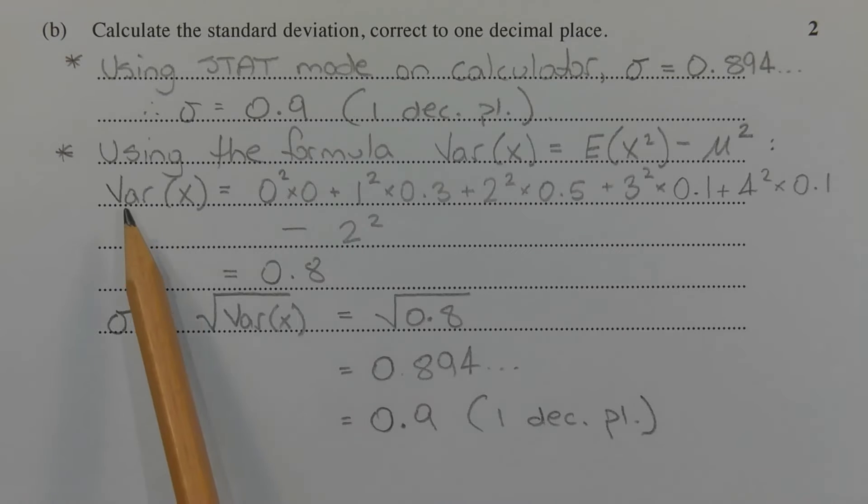Alternatively, we can use the formula: the variance of x is equal to the expected value of the square of the random variable minus the square of the expected value of the random variable. So that's E of x squared minus mu squared.